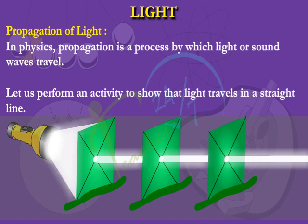This is due to the fact that light travels in a straight line. That's why you cannot see the light if any one of the index cards is moved slightly from its original position.